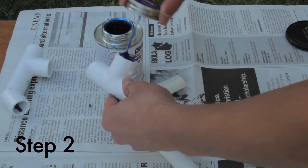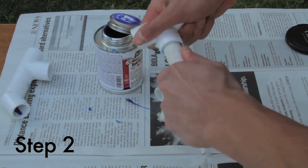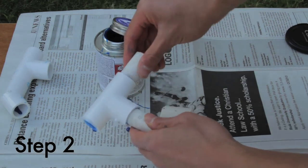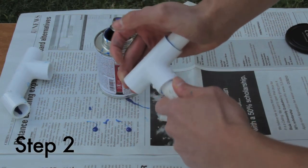Glue a 5-inch segment with a tee and also insert two 1.5-inch pieces. You'll do this two times.